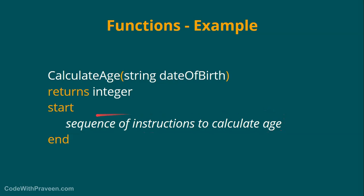The instructions can be a single line or span multiple lines. Once you define this calculate age function, whenever you want to calculate the age for any given date of birth, you can just call this function any number of times. Whenever you call the function, it will calculate the age as per the defined instructions and return the age as the variable value.